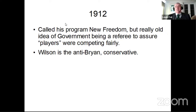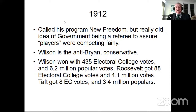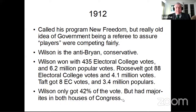The Democrats nominated Woodrow Wilson, the governor of New Jersey, who spoke in religious rhetoric to the electorate. He represented the Christian capitalist wing of the progressive movement, wanting to unify and balance the system based on biblical principles and ensure competition among big trusts. He called his program the New Freedom — government as a referee to assure business and labor compete fairly. Wilson won an overwhelming Electoral College victory with 6.2 million votes. Roosevelt got 88 electoral votes and 4.1 million votes. Taft got eight electoral votes and 3.4 million popular votes. Republicans would have won if unified, as they out-polled Democrats. Wilson got only 42% of the vote but had majorities in both houses of Congress.